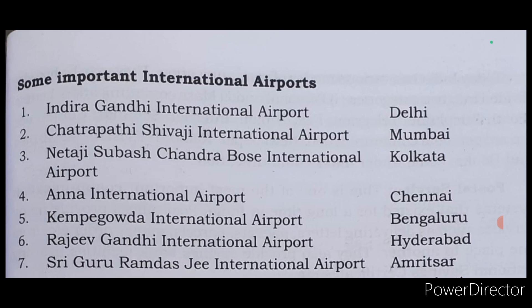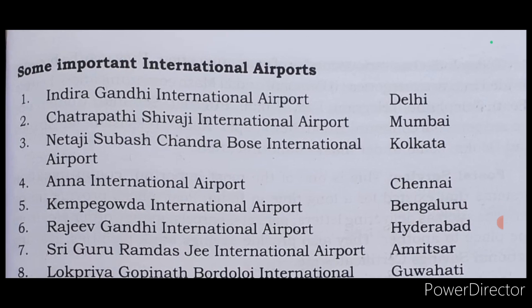Indira Gandhi International Airport is located in Delhi. Chhatrapati Shivaji International Airport, Mumbai. Netaji Subhas Chandra Bose International Airport, Kolkata. Anna International Airport, Chennai. Kempe Gowda International Airport is located in Bengaluru. Rajiv Gandhi International Airport, Hyderabad. Shri Guru Ram Dass Jee International Airport is located in Amritsar.